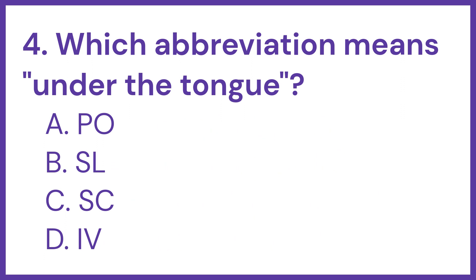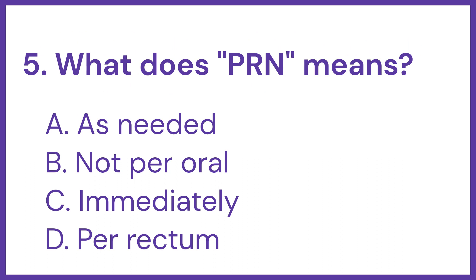Question number 4. Which abbreviation means under the tongue? Options are: A, PO; B, SL; C, SC; D, IV. PO means per-oral, SL means sublingual, and SC means subcutaneously. So the answer is option B, SL.